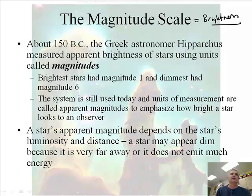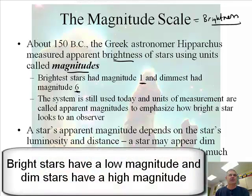Alright, in 150 BC, the Greek astronomer Hipparchus measured apparent brightness using something called magnitude. It kind of has a weird scale. This is going to be odd. The brightest star had a magnitude of one, and the dimmest magnitude of six. It's kind of backwards, isn't it?